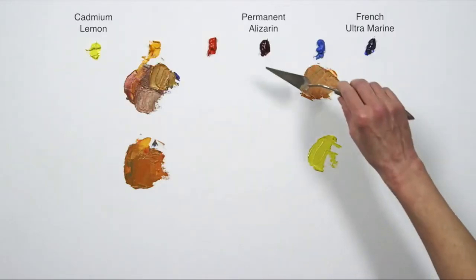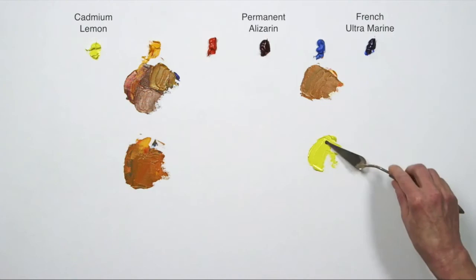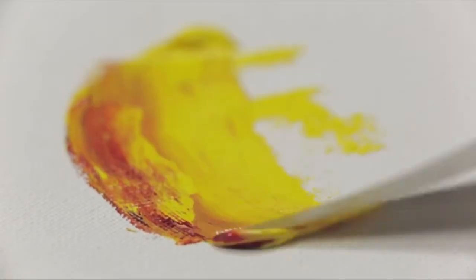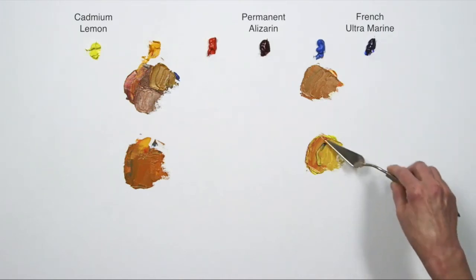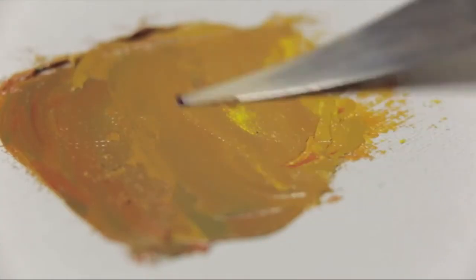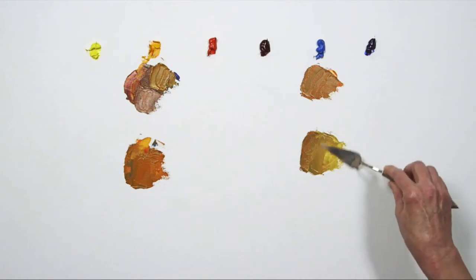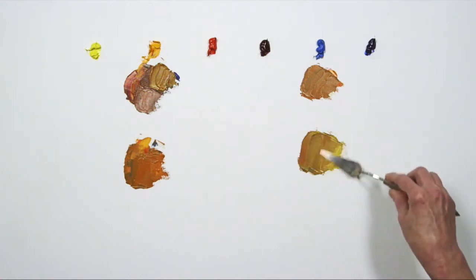By varying the amounts of each pigment, I can modify the hue of the brown as well as its value. You can make rich browns by using many different primaries, not just the ones I've shown. As long as at least one of your primaries is opaque, the results will be beautiful and complex.